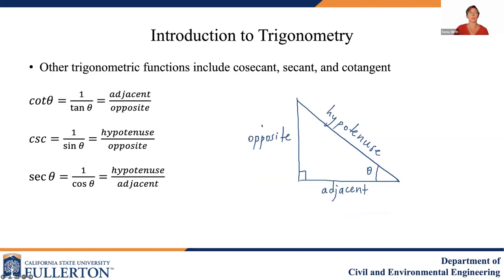There are other trigonometric functions, including cosecant, secant, and cotangent. They are related to sine, tangent, and cosine. The cotangent of an angle is 1 over the tangent of the angle — it's the adjacent over the hypotenuse. The cosecant is 1 divided by sine, which is the hypotenuse over the opposite side. And the secant is 1 divided by cosine, which is the hypotenuse over the adjacent.